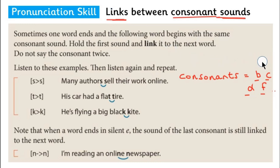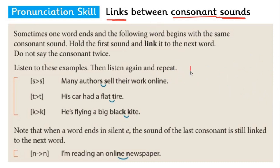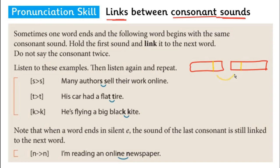If you have two words that come after each other, and the first word ends in a consonant sound and the second word starts with a consonant sound, then you link the two words together. You connect or join these two words together when you speak or read them. You don't stop and then say the consonant again.